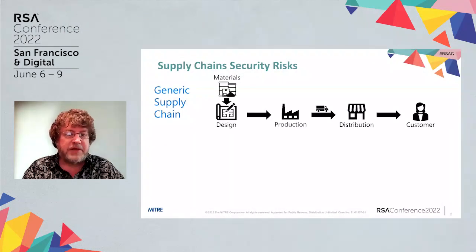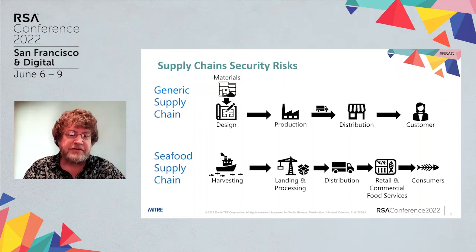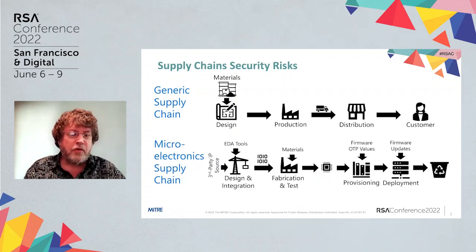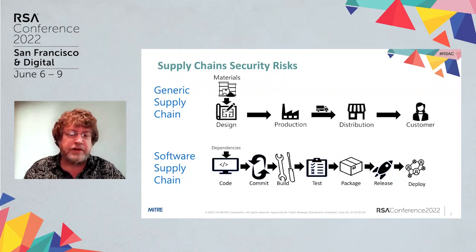My topic is around supply chain security risks, and I think everyone has a feel for how goods flow from raw materials, design, production, distribution, out to the customer. For most of us there are other topics we are familiar with, whether it's fish in the harvesting, landing, distribution, and then the fun part, eating it, or microelectronics where they're fabbed and packaged and put into computers and other devices, or software where they're created through software items being built, committed, tested, and sent on to the deployed environment.